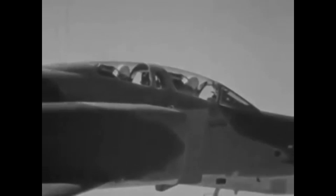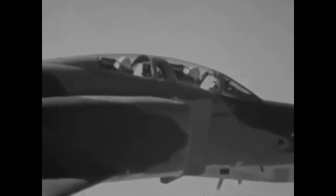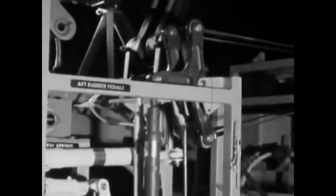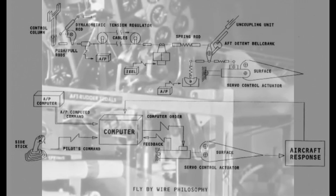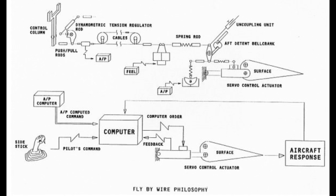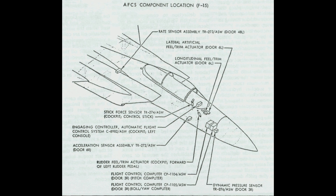A fly-by-wire control system replaces the mechanical control system with electronic sensors, computers and wires. The brain of the fly-by-wire system is the Flight Control Computer, or FCC. The FCC receives signals from sensors on the aircraft such as airspeed, roll, pitch and yaw rate, g-load, and altitude.